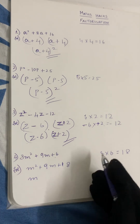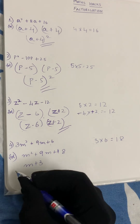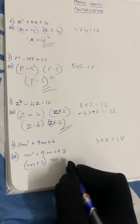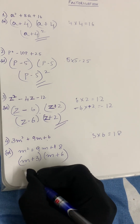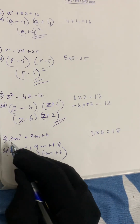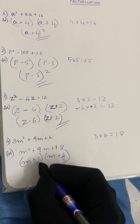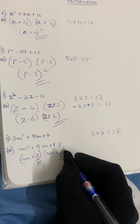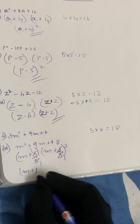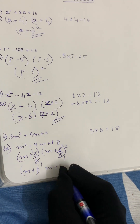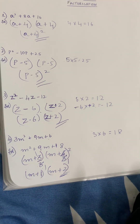We take m plus 3 and m plus 6 in brackets. Then we cancel the 3 in the denominator: 3 ones are 3 and 3 twos are 6. What is left is m plus 1 and m plus 2. So our final answer is m plus 1 into m plus 2.